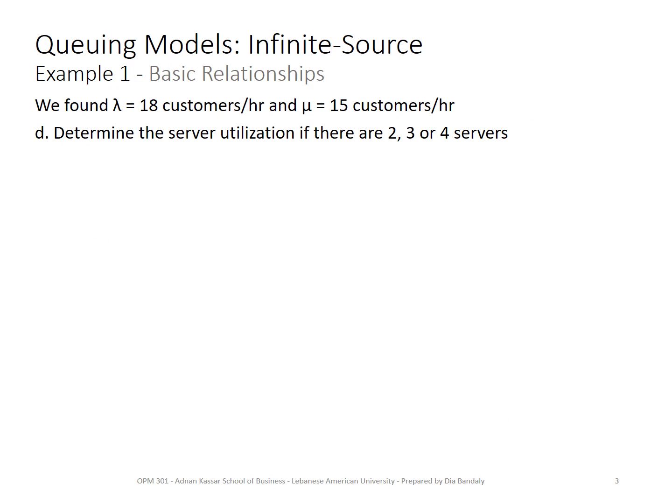Now we want to find the server utilization. They want to find the server utilization if we have two, three, or four servers. Server utilization, we know that it's rho equals lambda over mu times m. We know what's lambda, we know what's mu, and m is given as we want to change it between two, three, and four. So for m equals two, just plug the figures and you will get it. It's 0.6.